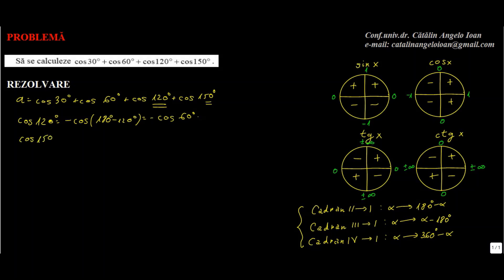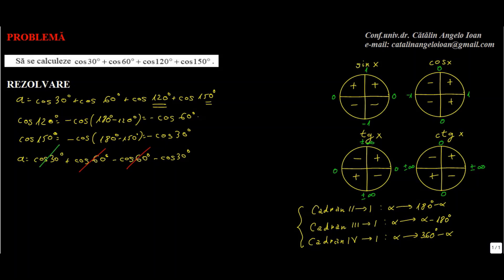De asemenea, cos de 150 de grade: unghiul de 150 de grade, fiind ca și cel de mai sus în al doilea cadran, este minus cosinus de 180 minus 150 de grade, egal cu minus cosinus de 30 de grade. Haideți să vedem cine este numărul A. A egal cu cos de 30 plus cosinus de 60, plus cos de 120, care era minus cosinus de 60, plus cos de 150, care era minus cosinus de 30 de grade. Observați că nu mai avem nevoie să le calculăm, pentru că cosinus de 60 se reduce, cos de 30 se reduce, prin urmare A egal cu 0, și cu aceasta problema s-a încheiat.